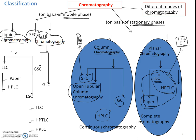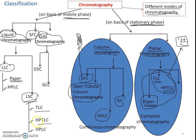Liquid chromatography uses liquid as the mobile phase and can be further classified on the basis of the nature of the stationary phase. In paper chromatography, the trapped or bound water acts as the stationary phase, so both stationary and mobile phases are liquid — this is liquid-liquid chromatography. When the nature of the stationary phase is solid and the mobile phase is liquid, it is liquid-solid chromatography. TLC, HPTLC, and HPLC are examples of liquid-solid chromatography.